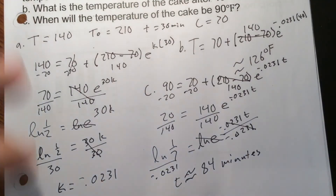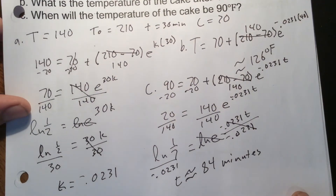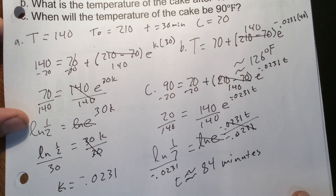So you'll have to wait about 84 minutes before you can eat your cake. If you're baking at home, you can figure out how long it's going to take to cool down.